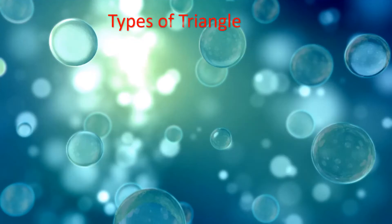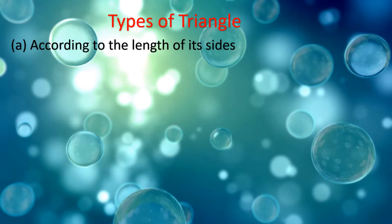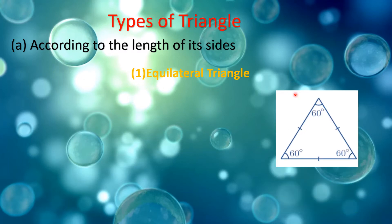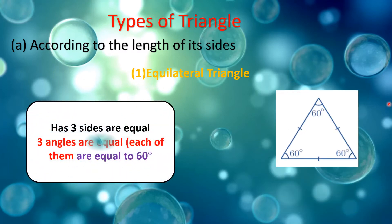Types of triangle according to the length of each side. One: equilateral triangle. An equilateral triangle has three sides equal in length and three angles equal in measure.